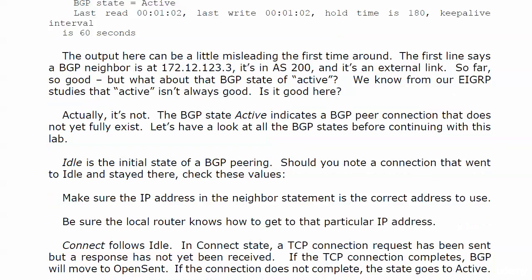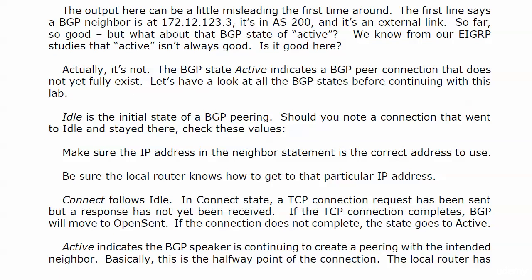There are some BGP states you might not see during these labs, so let's cover them all now — this helps you spot issues. First is 'idle,' the initial state of a BGP peering. If a connection goes to idle and stays there, 99.9% of the time it's one of two things: make sure the IP address in the neighbor statement is correct. Everyone mistypes a number sooner or later — check that first.